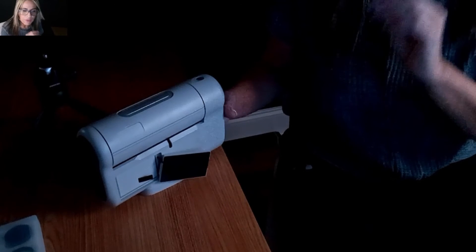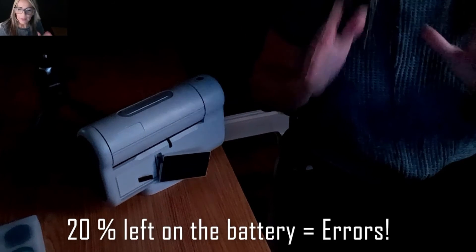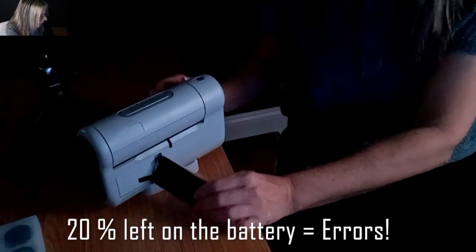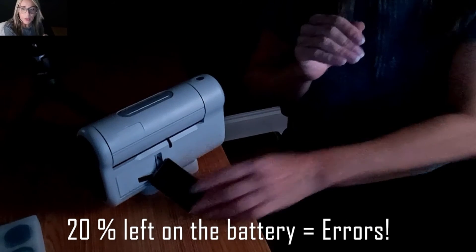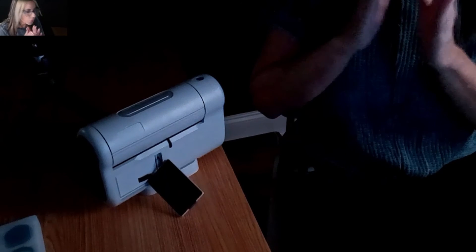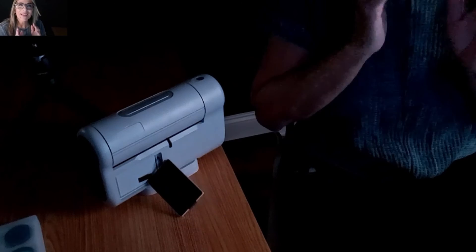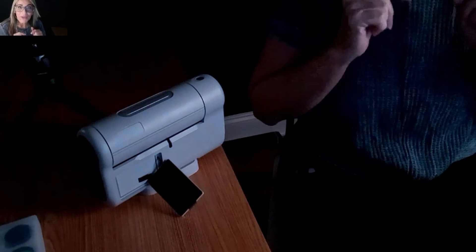When this telescope reaches about 20 percent battery left, which you can see in the indicator, the telescope doesn't work well. Always be sure that the batteries are charged, even when you're going to take your dark frames or whatever you're doing with this telescope.